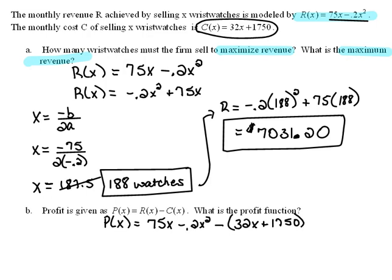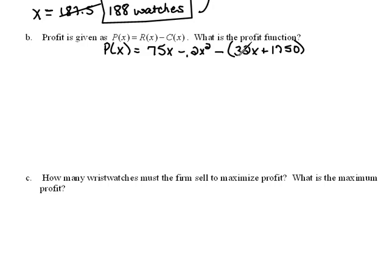Now notice that I put the cost function in parentheses. I did that on purpose because we're going to be subtracting off more than one thing. So I did that to help remind me that I need to distribute that negative.